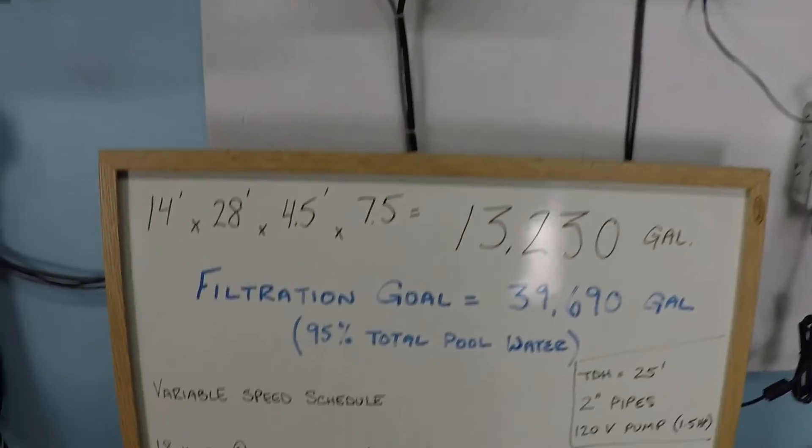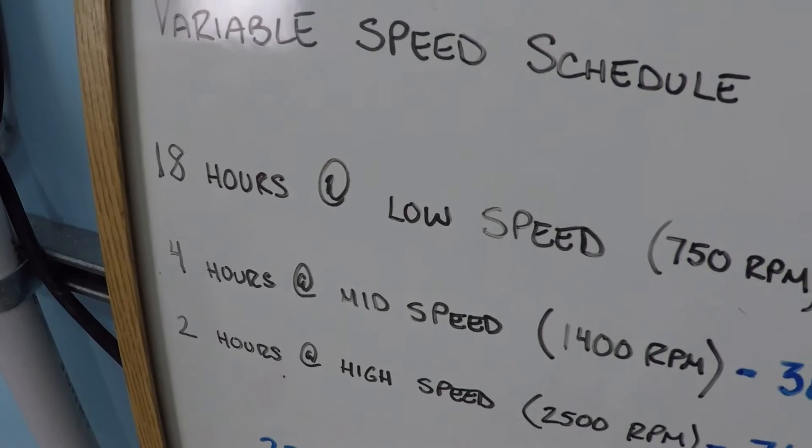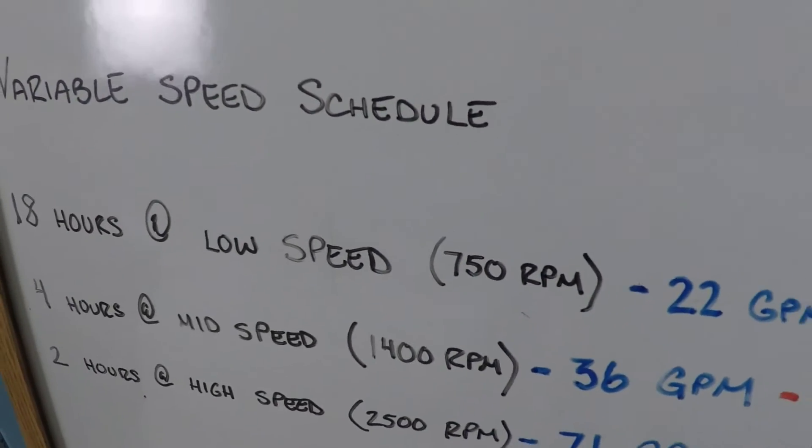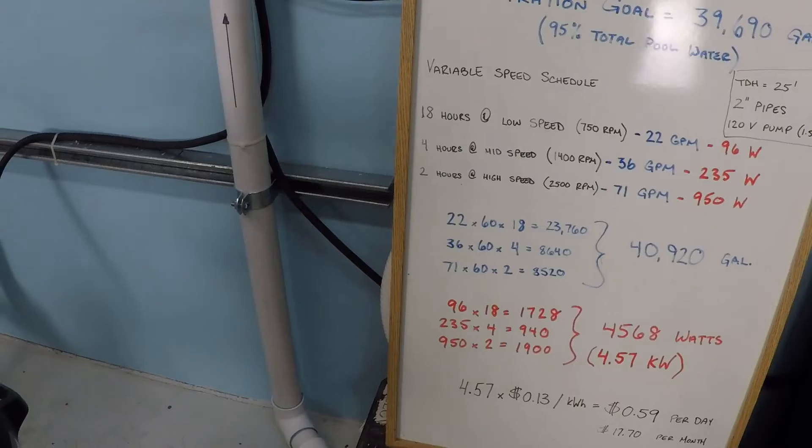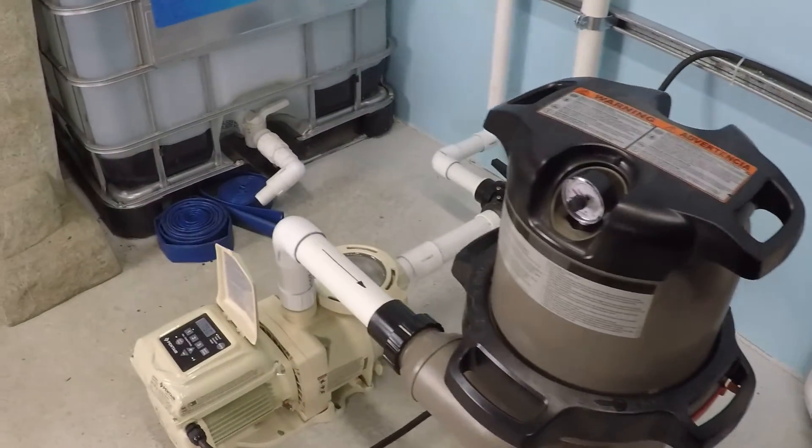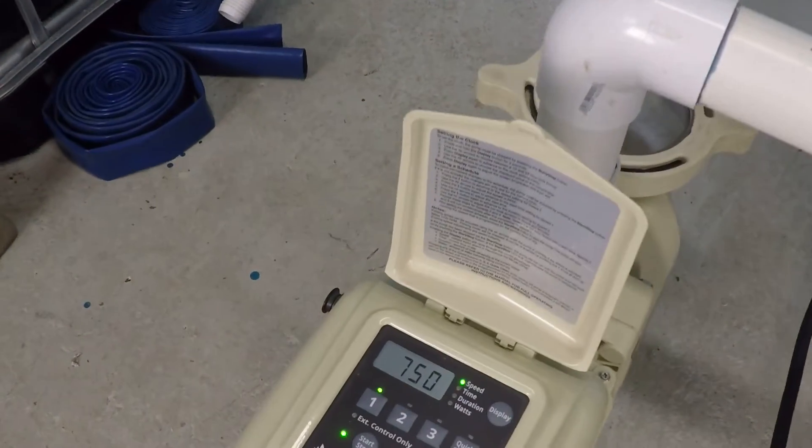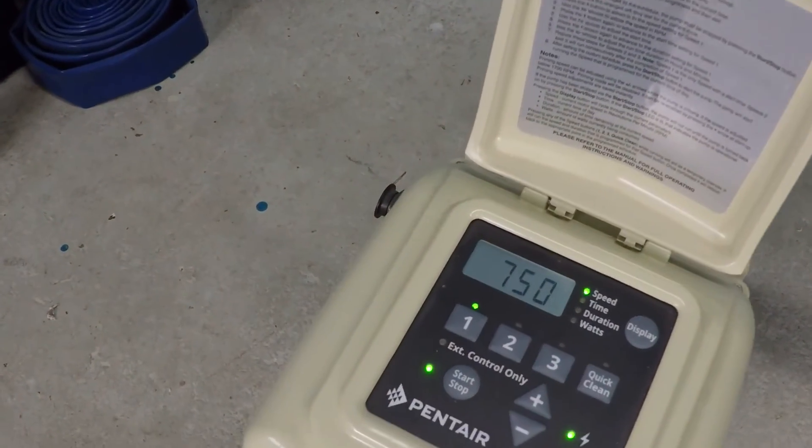So as I was saying, you want long hours at low speeds. Well, what is low speeds? What is a good RPM for low speed? That is a dynamic question, and the answer is different for every single swimming pool. And that's the reality of the situation. But let's look at some real-world situations here.